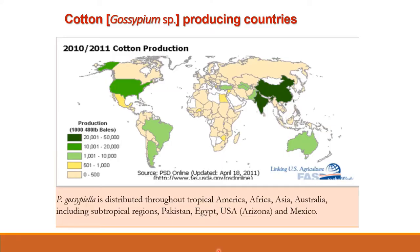The scientific name of cotton is Gossypium species. There are many species cultivated in different parts of the world. Cotton belongs to the family Malvaceae.